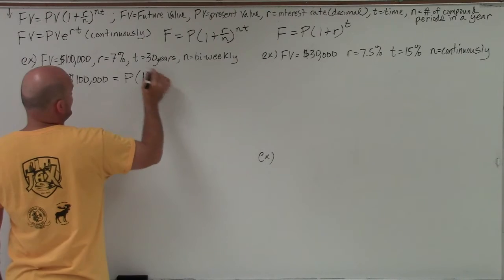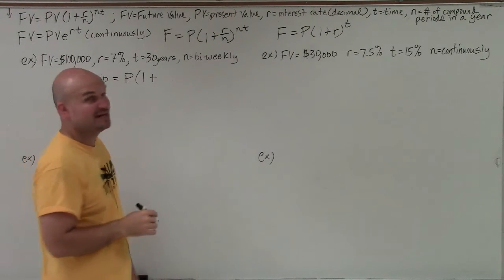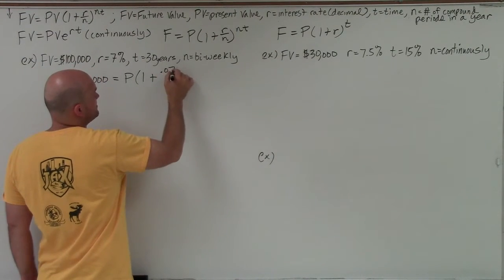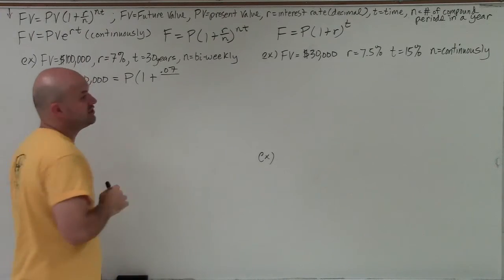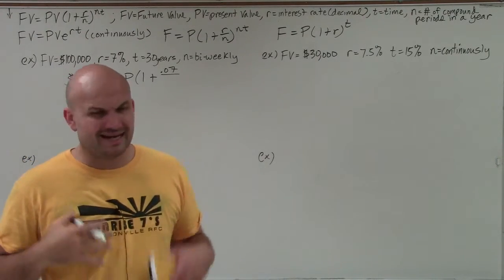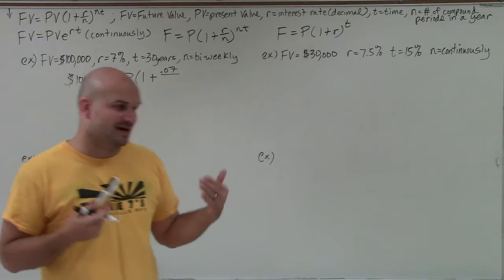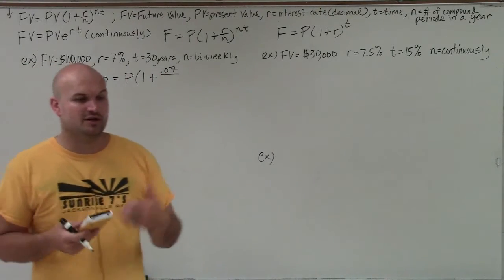And then I'm going to multiply that by 1 plus my interest rate. Remember to put your interest rate in decimal form. So that's going to be 0.07 divided by the number of terms I compounded. Now I didn't tell you how many times I compounded because typically, we want to make sure we remember monthly,